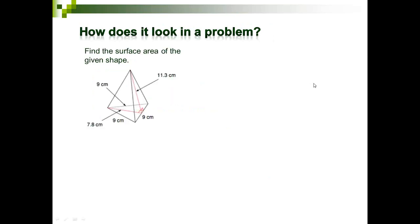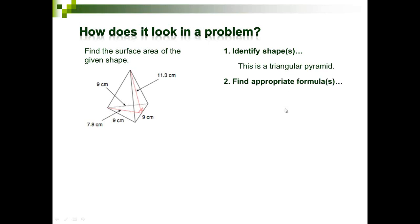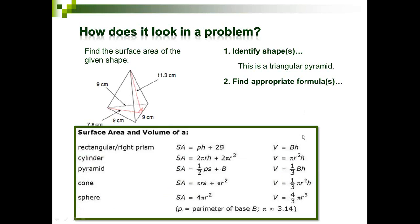Given this shape — I see a triangular base with three sides, so I know this is a triangular pyramid. Now I need to find the appropriate formula. Looking at my formula sheet, I find the pyramid section, and because it asks for surface area, I identify the correct formula: SA equals one-half PS plus B.